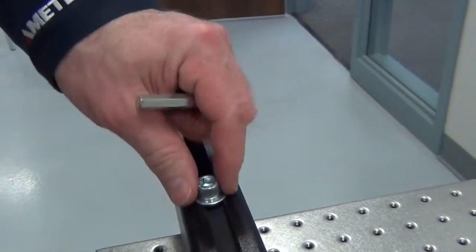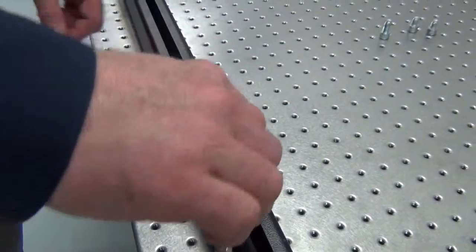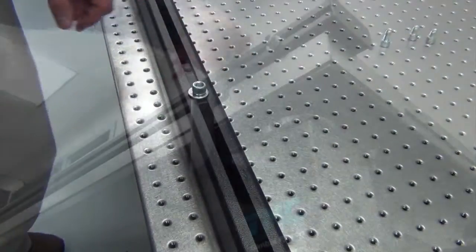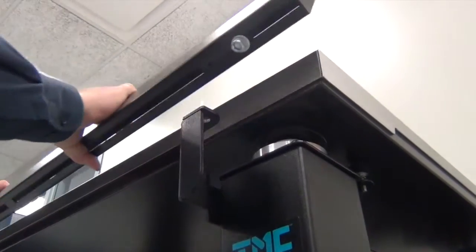On the underside of the front support bar, loosen and slide the two bolts. Position the front support bar on the brackets. Insert the two long bolts on both ends.